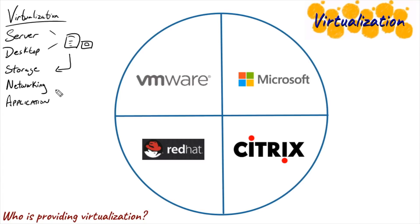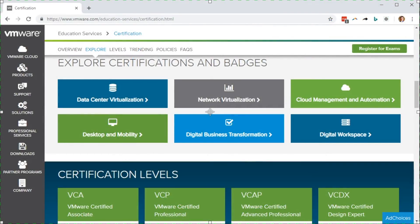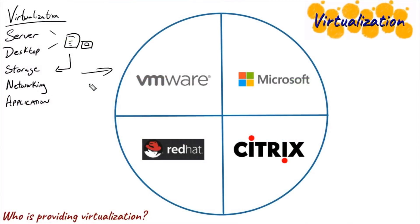VMware is the big dog of virtualization — they are the biggest player out there. All of these different types of virtualization that we've discussed, VMware can do them all. If we go to VMware's website and look at certification, the list of certification options goes on and on. It's all about virtualization — that is what the company does. That's what the V in VMware is for. But they are certainly not the only player out there in the virtualization world.